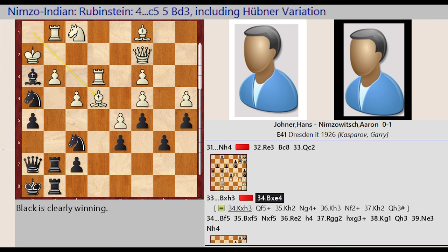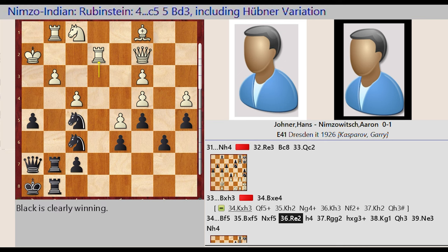Bh7 takes e4, Bf5, B takes f5, N takes f5, Re2.